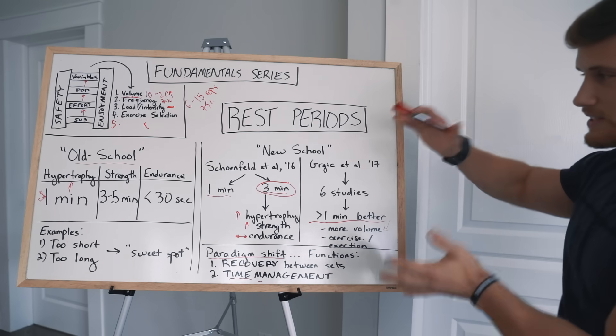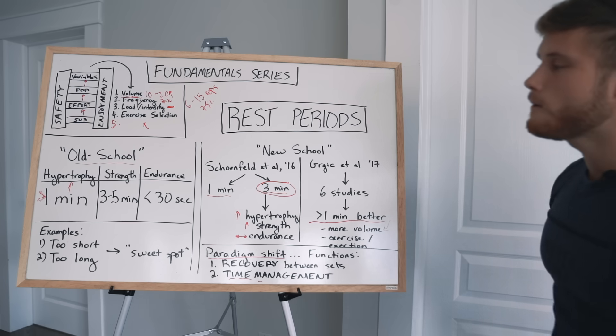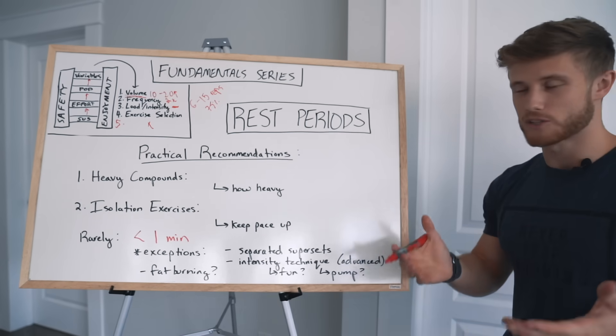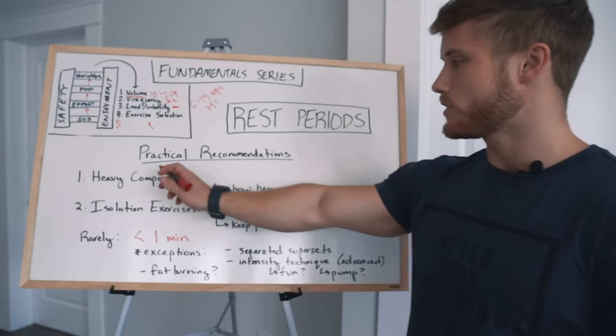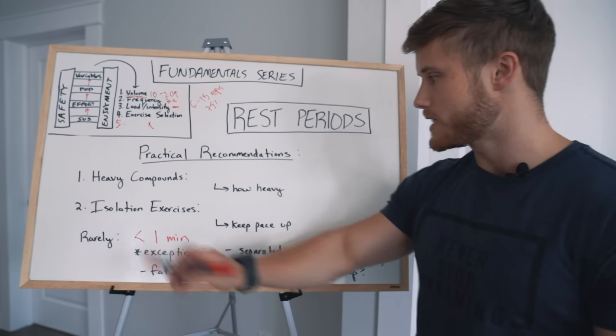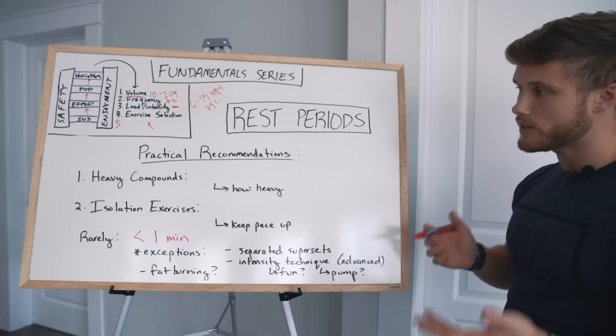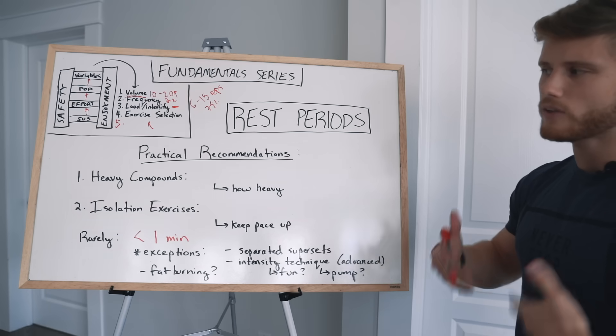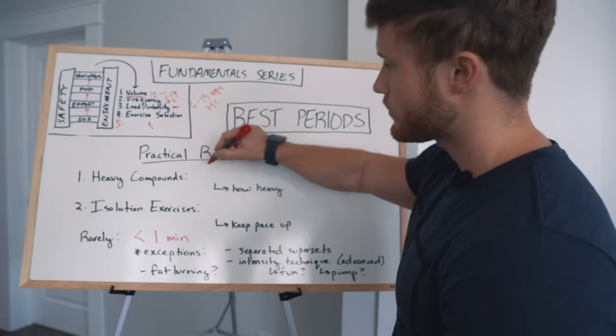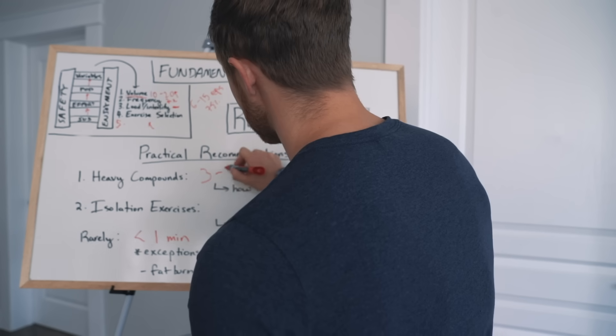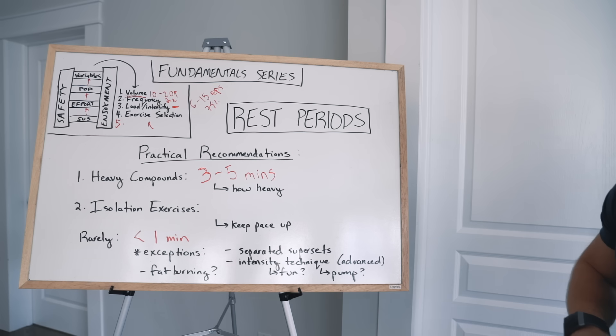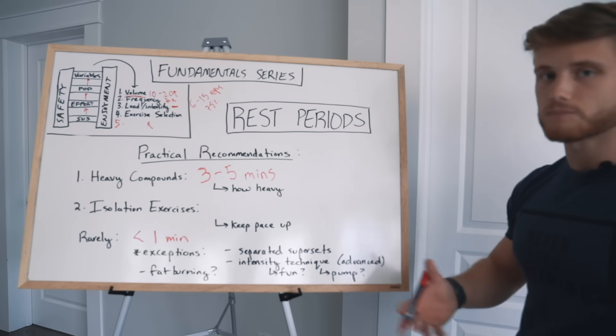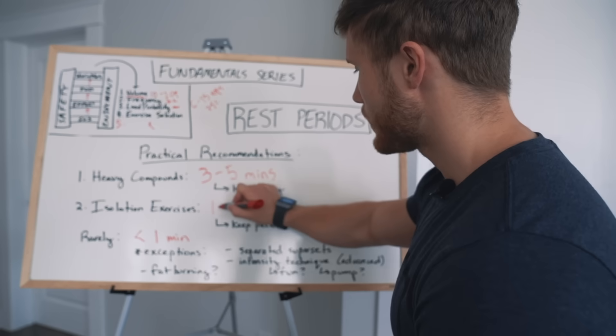So with that basic conceptual stuff out of the way, now I'm going to dig into some specific programming examples. So how long should you actually rest between sets? And I've split this up according to type of exercise, and we're going to talk about a few potential exceptions. So for the most part, for heavy compound exercises that are going to require a large amount of muscle mass and typically have a higher recovery cost, you're going to want to rest for slightly longer. So for these, I say 3 to 5 minutes. And then for isolation exercises that usually have a lower recovery cost and utilize smaller muscles, I'm going to say 1 to 2 minutes for these.